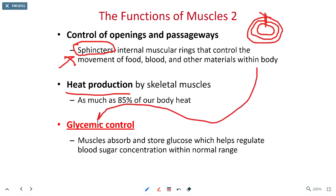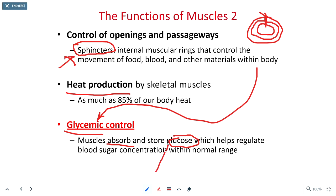We also use our muscles to control blood sugar — we have glycemic control. In particular, our muscles are capable of absorbing excess blood glucose, and we store that extra sugar in the muscles as glycogen, the animal complex carbohydrate. That can later be utilized by those same skeletal muscle cells that stored it. The glucose absorbed in a skeletal muscle fiber can only be used within that skeletal muscle cell; it can't be sent back into the bloodstream to be used by other tissue types.